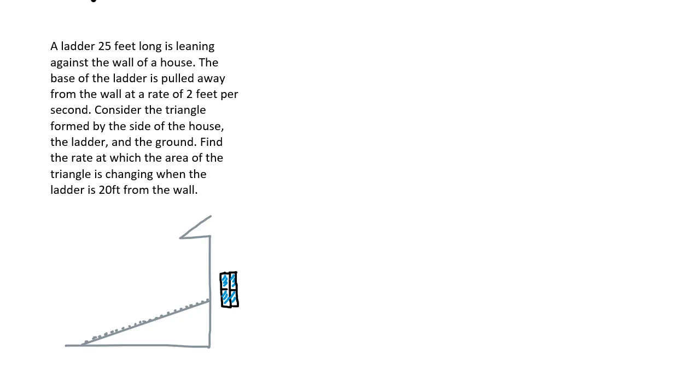A ladder 25 feet long is leaning against the wall of a house. The base of the ladder is pulled away from the wall at a rate of 2 feet per second. Consider the triangle formed by the side of the house, the ladder, and the ground. Find the rate at which the area of the triangle is changing when the ladder is 20 feet from the wall.